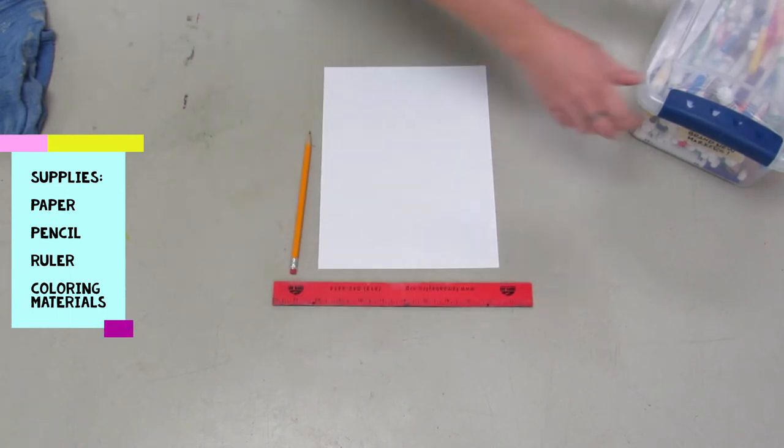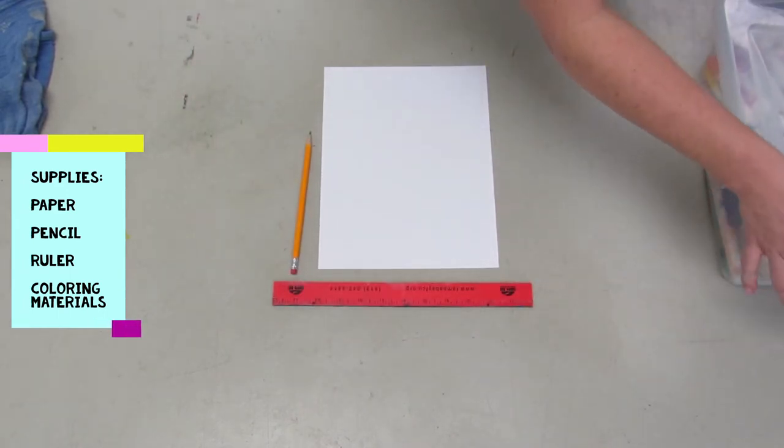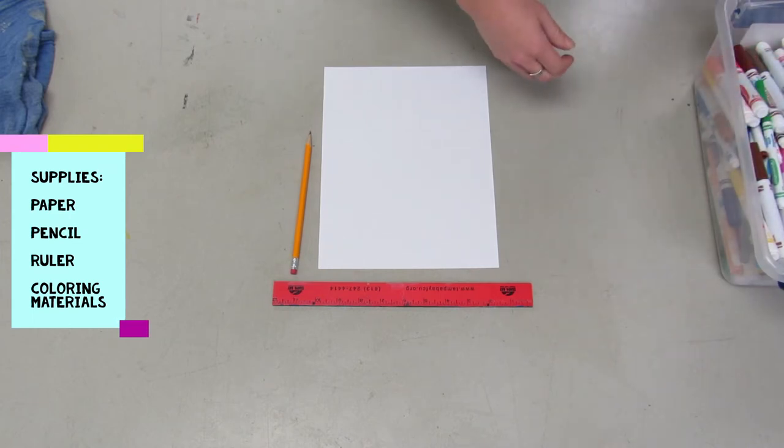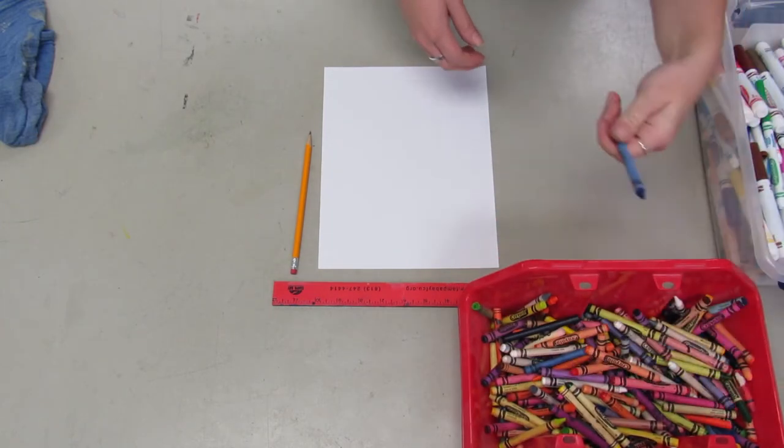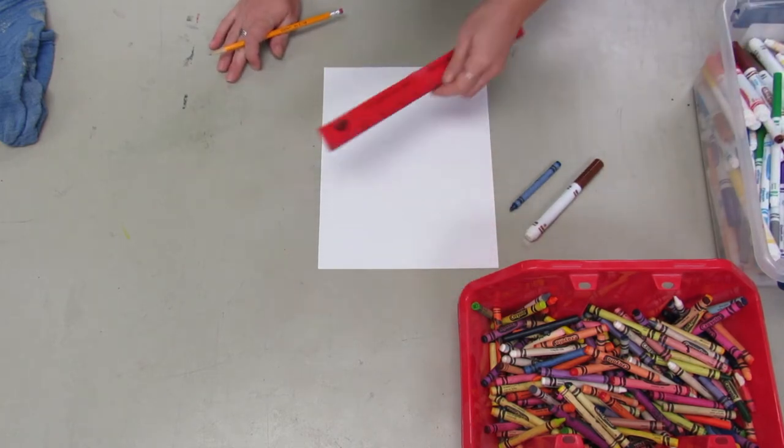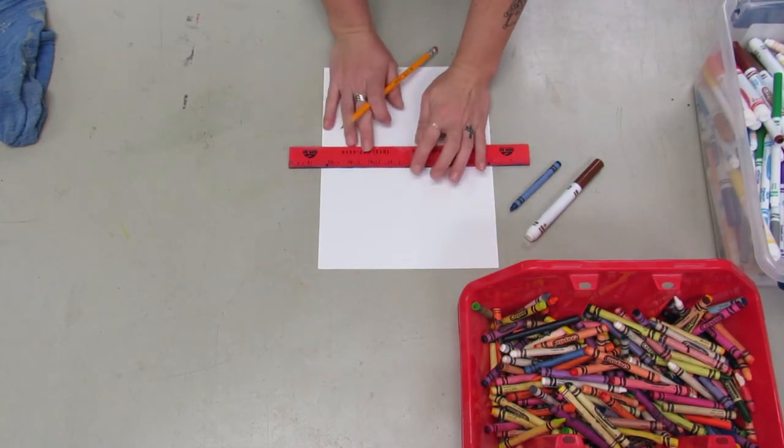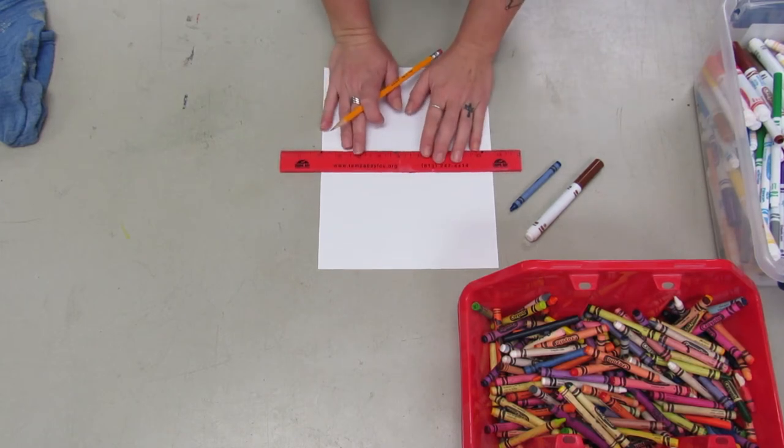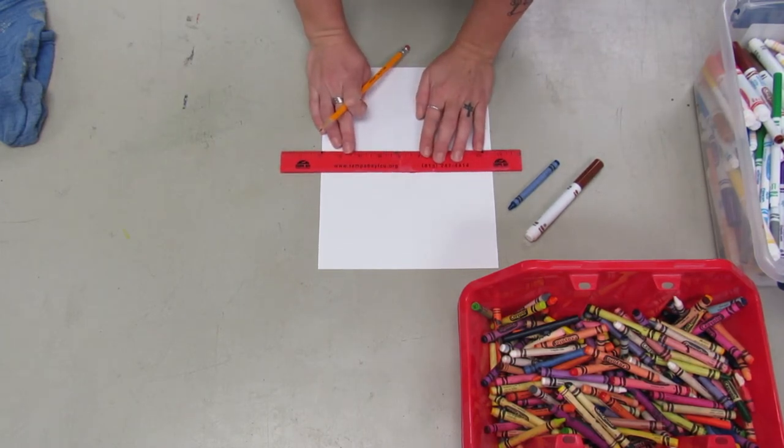The supplies you're gonna need today are paper, pencil, a ruler, and some coloring materials. I have markers and crayons because I like to use markers for certain things and crayons for bigger areas of coloring so I don't wear my markers out.